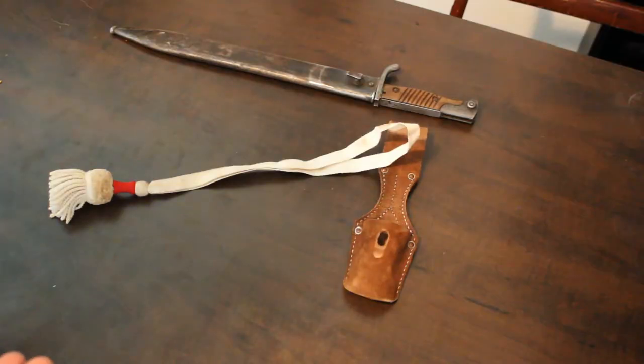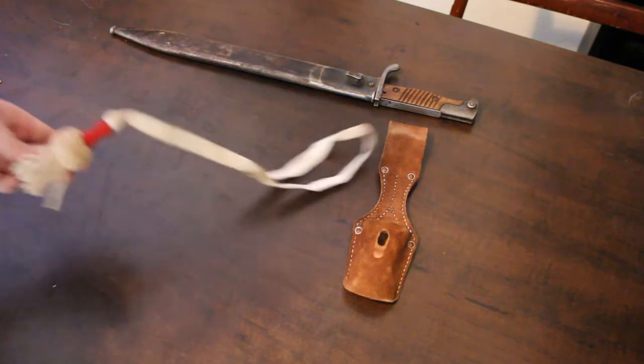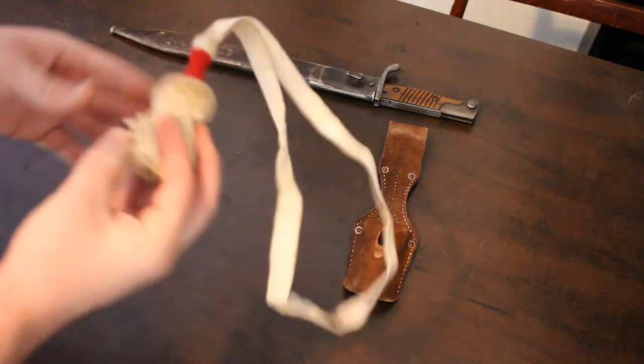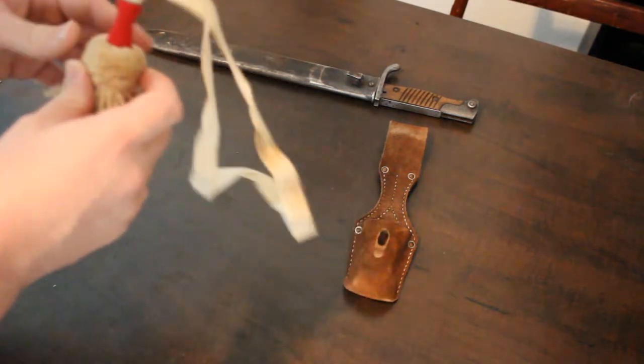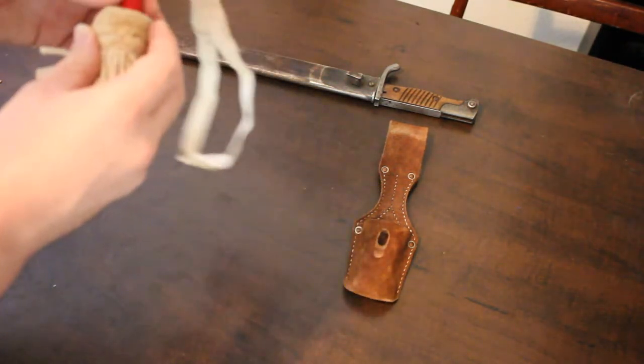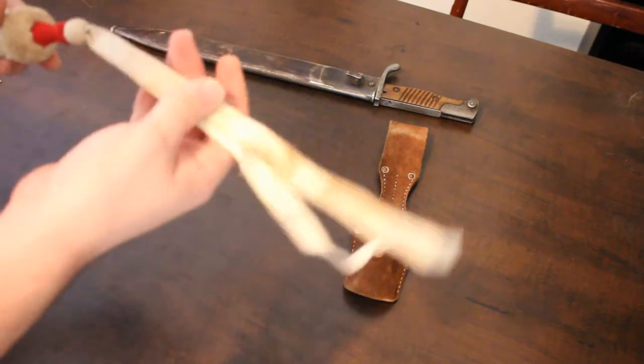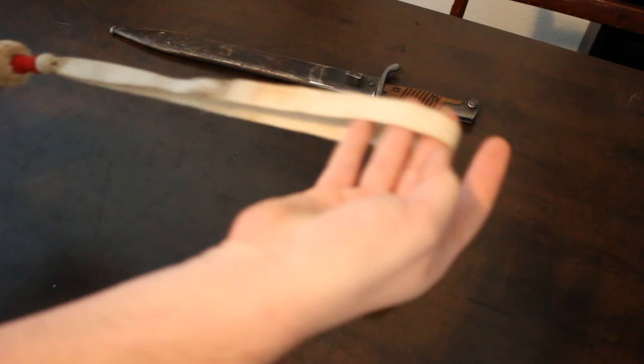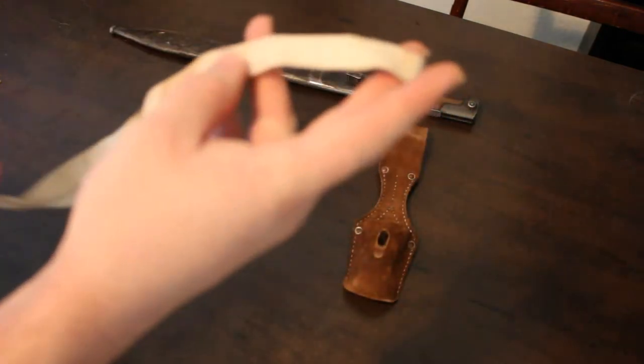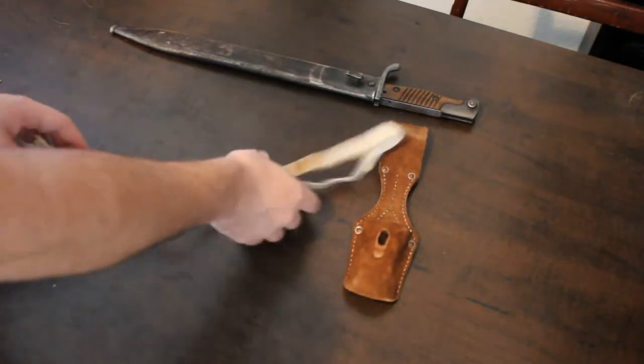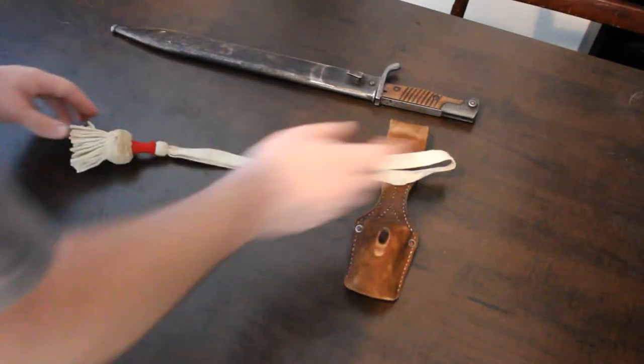Effectively, what these are is they are things to signal what battalion and what company you are part of. This one in particular is for the 2nd Battalion, 5th Company, as you can tell by the white frills, white bottom ball, the red middle, and then the smaller white ball on the top. Mine is really dirty, as I haven't really gotten around to cleaning it, and I've been doing some different events in a lot of dirt and dust.